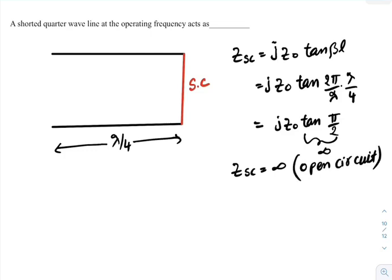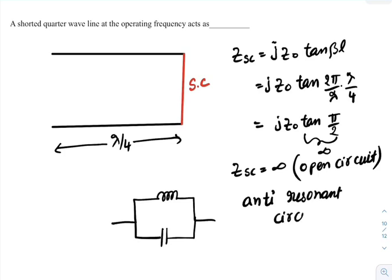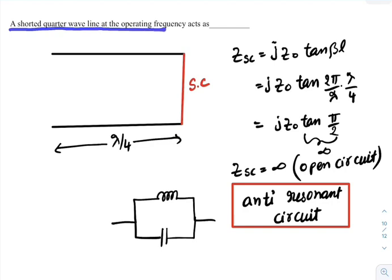That means this transmission line acts as an open circuit. The equivalent circuit is given by a parallel combination of inductor and capacitor, and we call this circuit an anti-resonant circuit. A shorted quarter wave line at the operating frequency acts as an anti-resonant circuit.